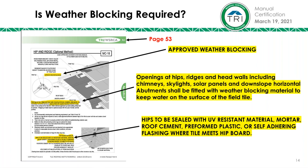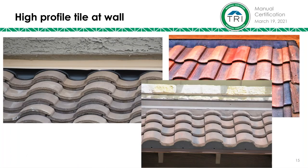We started down the path of saying: if we require weather blocking, for sure we need it on S tile because it's got huge gaps, but does it make sense on other products? And are there certain areas of the roof where it can really help long-term performance? So we started drilling down in the next version of the manual, looking at options on flat tiles and low profile tiles for the minimums. Our committee had about 20 roofers involved, and we tried to keep it as open to as many products as possible — mortar, preformed plastic, or self-adhering flashing, anything that would help make it work.